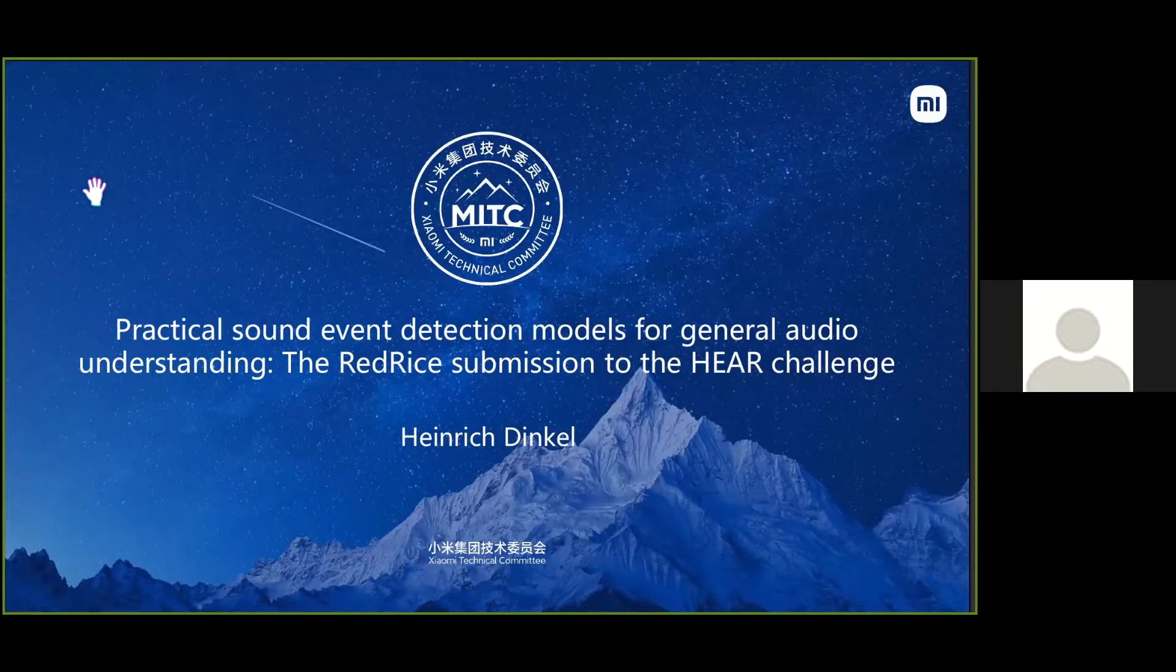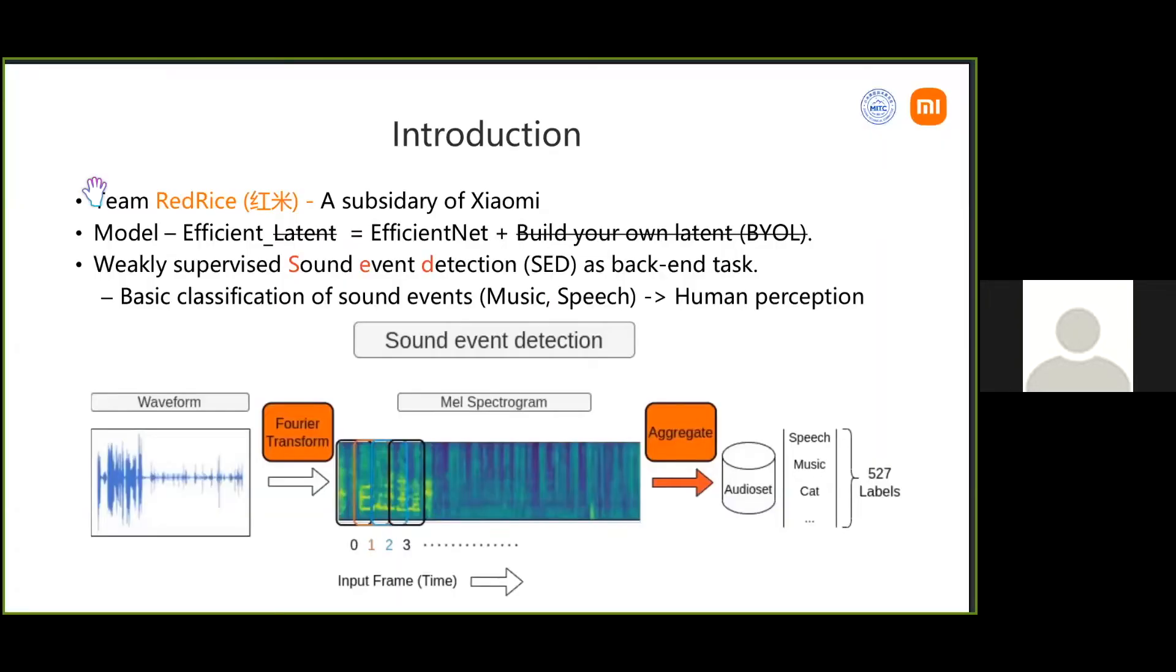This is a more or less one team project, so it's just me. Let me introduce the team - Red Rice is just a sub-brand of our company, they do phones, so I just made a joke out of it. My model, which I submitted, is called EfficientLatent, which I originally intended to be EfficientNet with a BYOL self-supervised approach, but that failed.